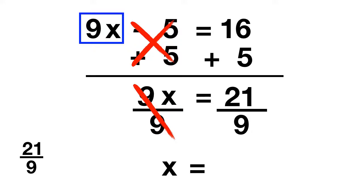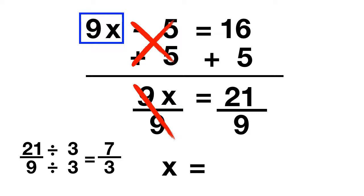Let's think about the fraction 21 ninths — you can simplify this fraction. To simplify a fraction, think about dividing both the top and the bottom by the same number. Think about what numbers you could divide both 21 and 9 by. You could divide 21 and 9 by 3. 21 divided by 3 equals 7, and 9 divided by 3 equals 3. Because we divided by 3 on both the top and the bottom, all we did was simplify our answer. The best way to write your answer is that x is equal to 7 thirds.